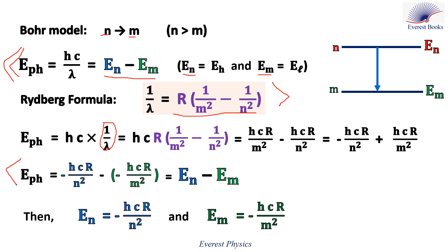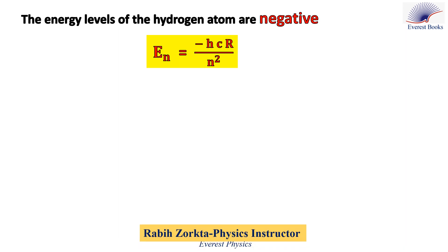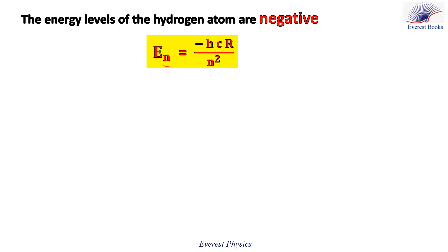Comparing this equation with the energy difference equation, we get En equals minus hcR over n squared, and Em equals minus hcR over m squared. The energy level of quantum number n is given by this relation. Since hcR and n squared are both positive, the energy levels of the hydrogen atom are negative.